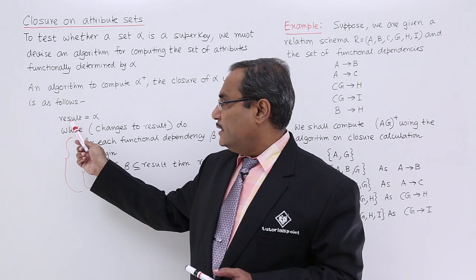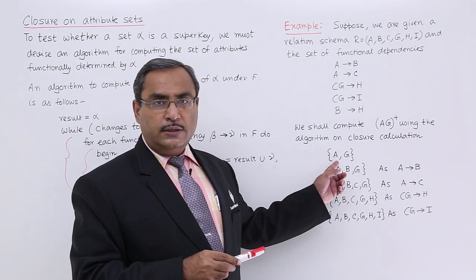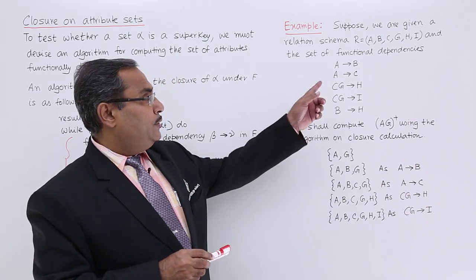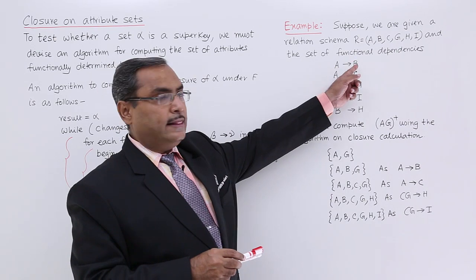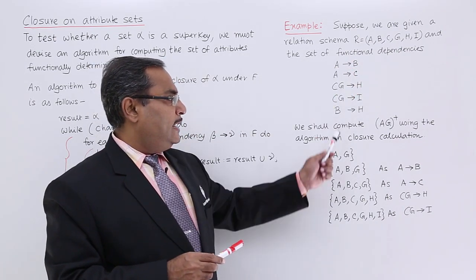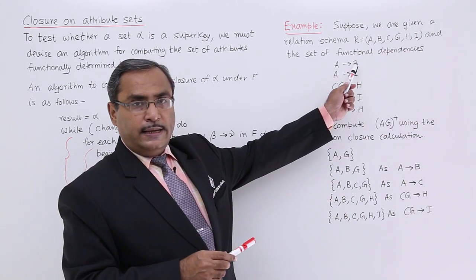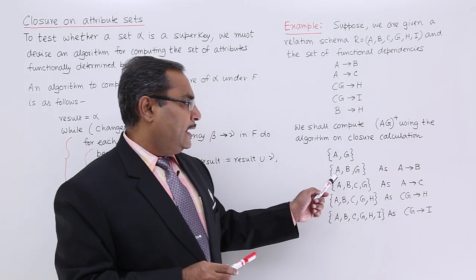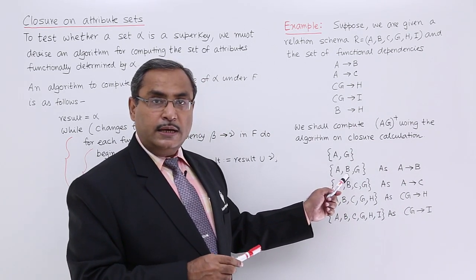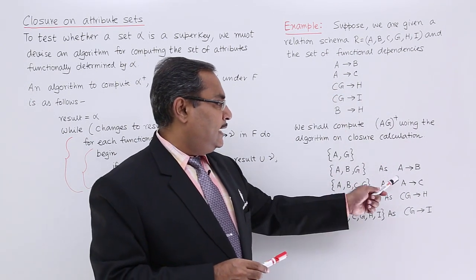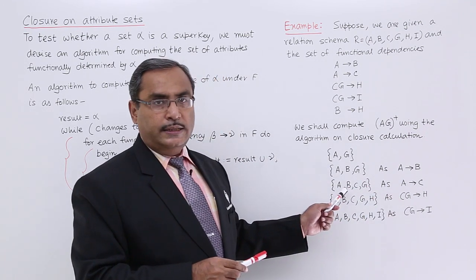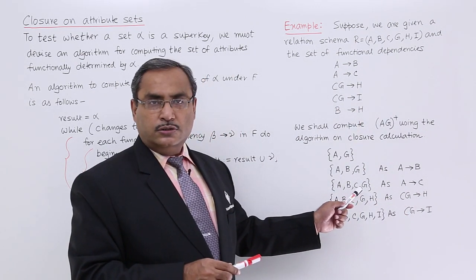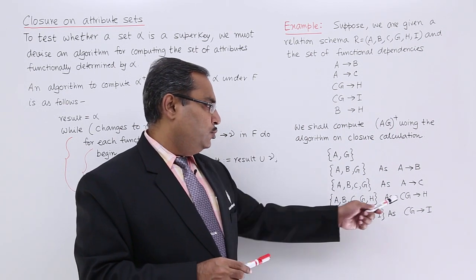In the first step, result is equal to alpha, so we keep A and G initially in the result. Consider the first functional dependency A determines B — beta is A and gamma is B. Since A is already in the result, we bring B into the result via union. Next, CG determines H: both C and G are subsets of the result, so we bring H into the result.